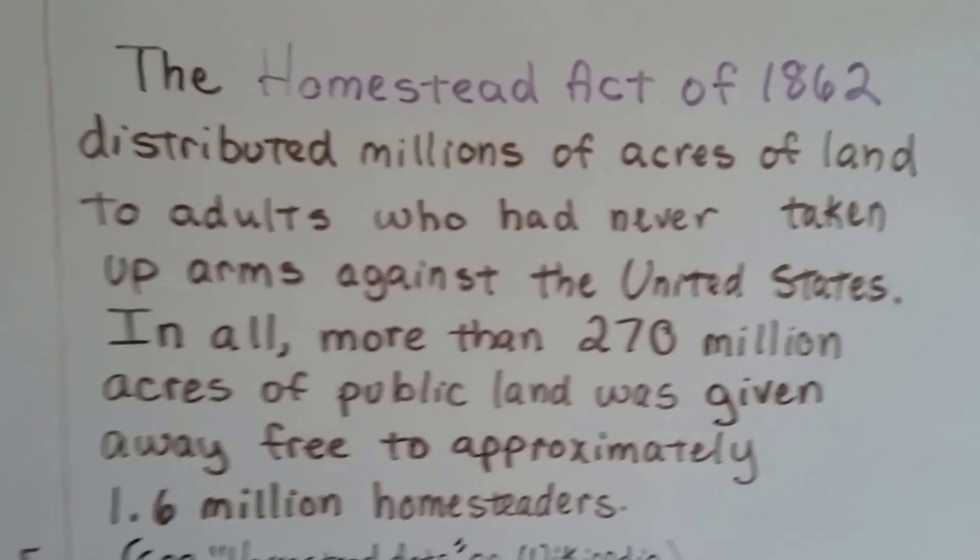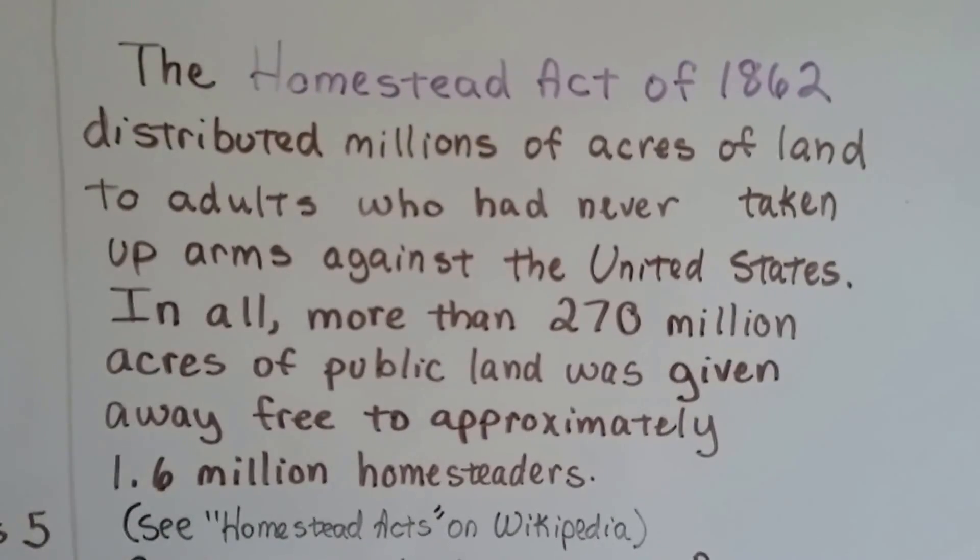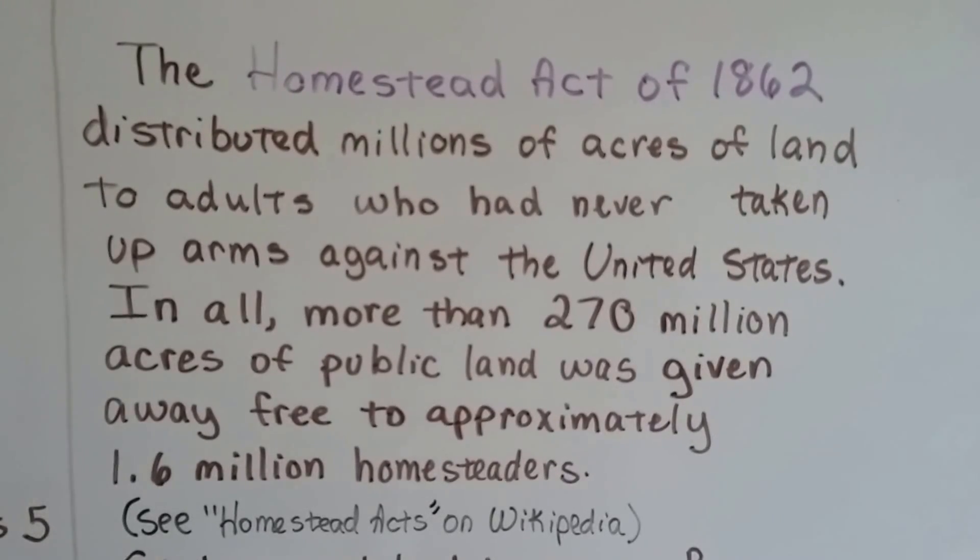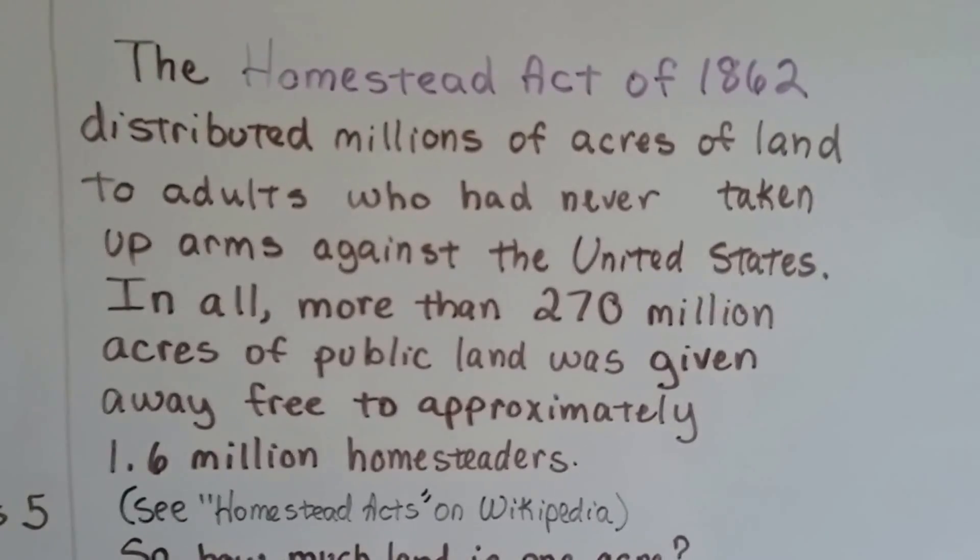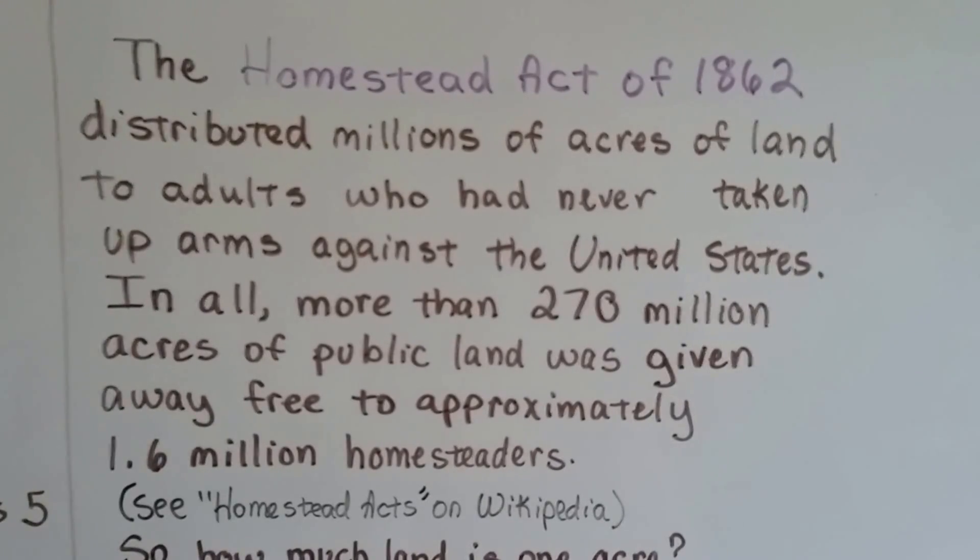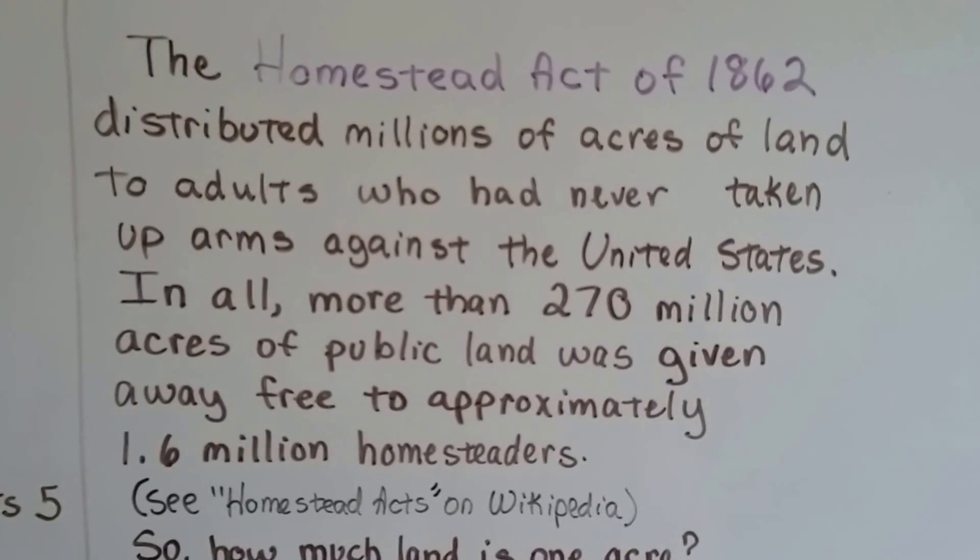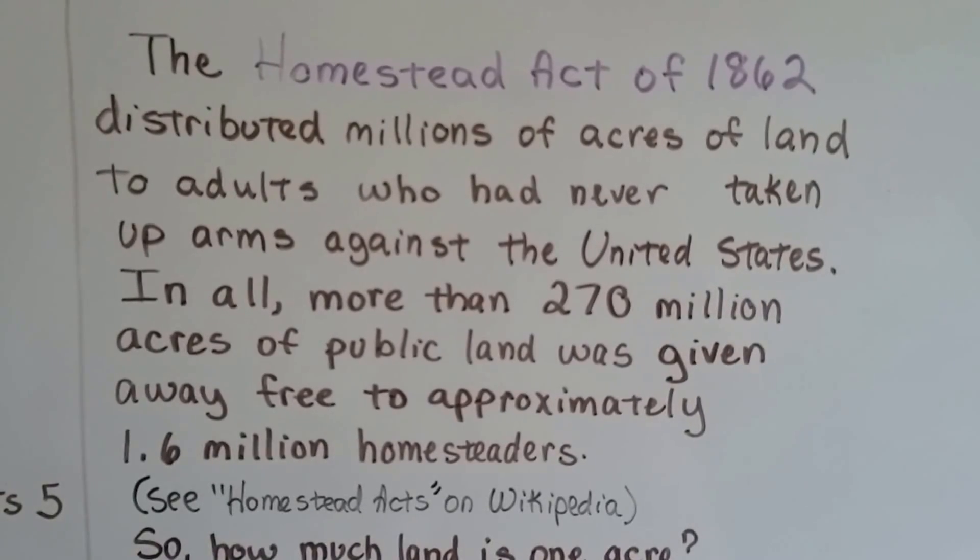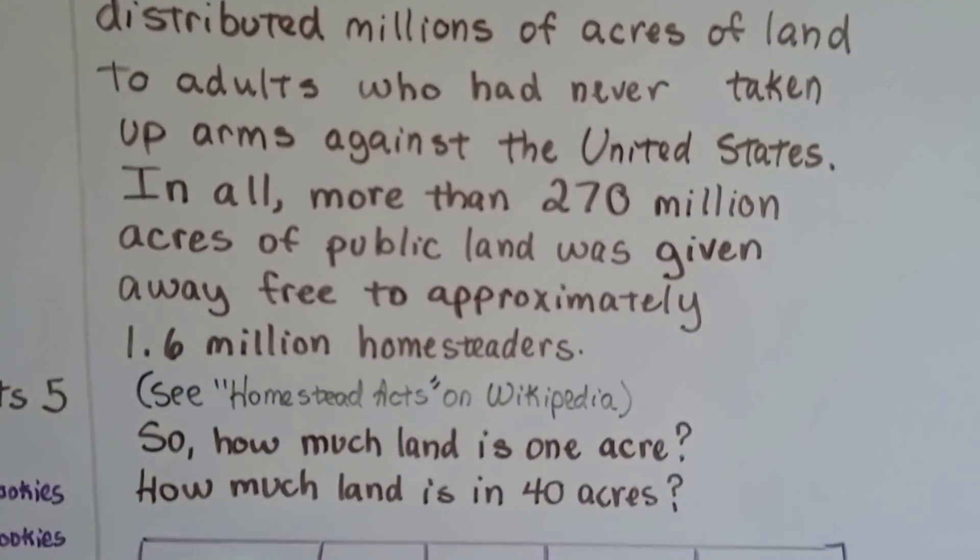The Homestead Acts of 1862 distributed millions of acres of land to adults who had never taken up arms against the United States. In all, more than 270 million acres of public land was given away free to approximately 1.6 million homesteaders. They didn't have it easy. There was no plumbing, no electricity. They were living in sod houses out in the middle of nowhere with no neighbors. You can see the Homestead Acts on Wikipedia to read more about it. It's really interesting.